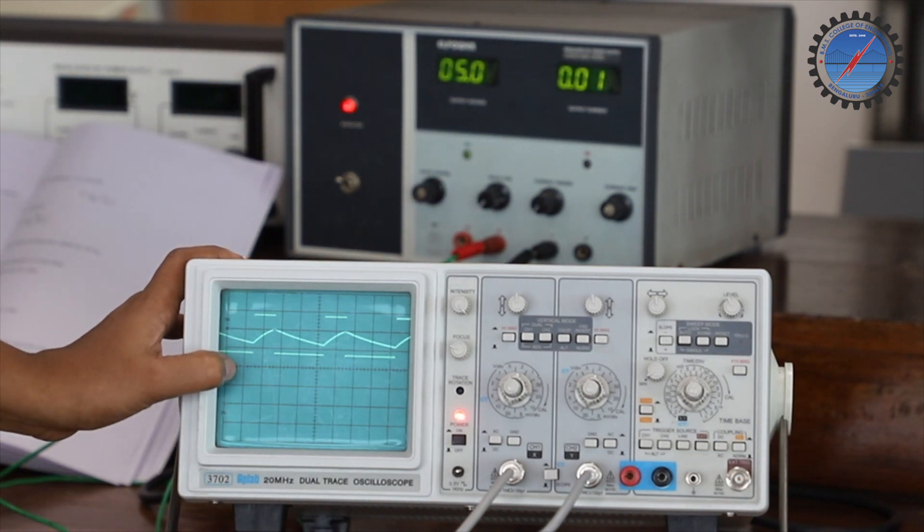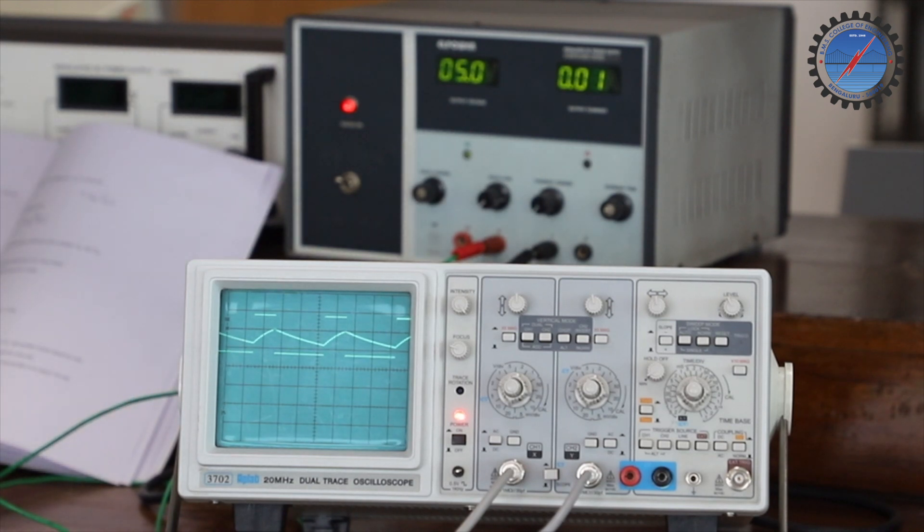This is the output waveform for 25 percent duty cycle. If you want 50 percent duty cycle, change values of RA and RB accordingly, and similarly for 75 percent duty cycle. By using a diode and selecting equal values of resistors RA and RB, you will be able to design it to get 50 percent.